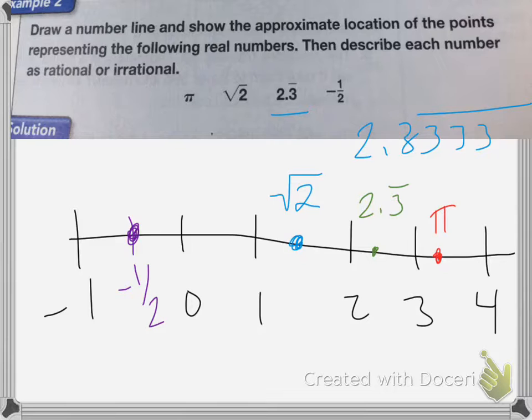So the numbers that are rational are both, the rational numbers are negative 1 half and 2.3, while the square root of 2 and pi are the irrational numbers.